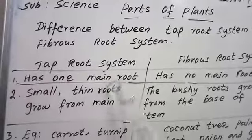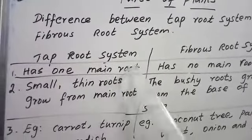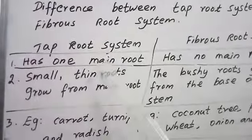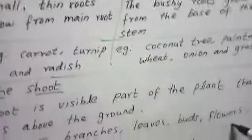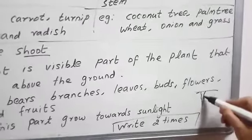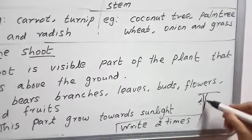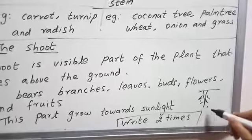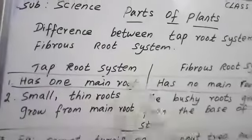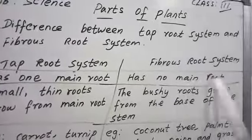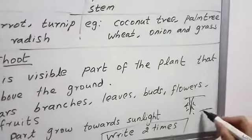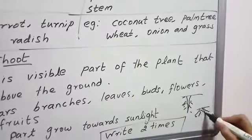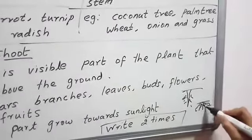Tap root has only one main root. If you see the picture, you can see it has only one main root — this part is known as tap root. Fibrous root has no main root. If you see this, it has no main root.